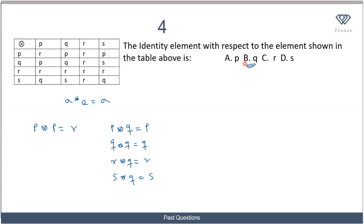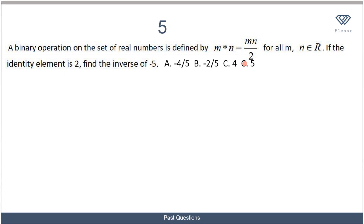Now let's look at the last question. A binary operation on the set of real numbers is defined by m★n = mn/2 for all m, n in R. The identity element is given as 2. We are told to find the inverse of -5. To find the inverse, recall that a★b = e, where b is the inverse. So with a = -5, we have -5★b = 2.